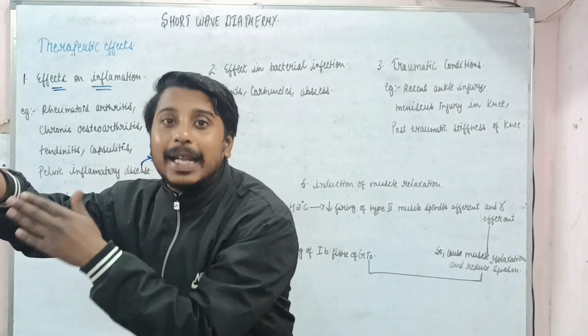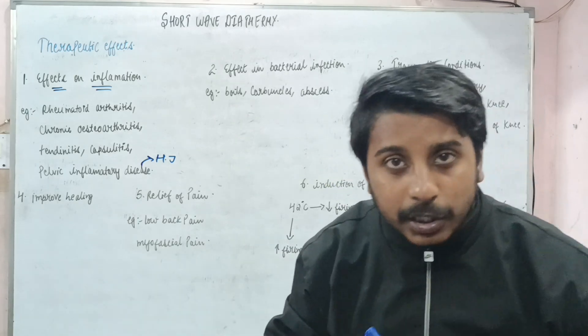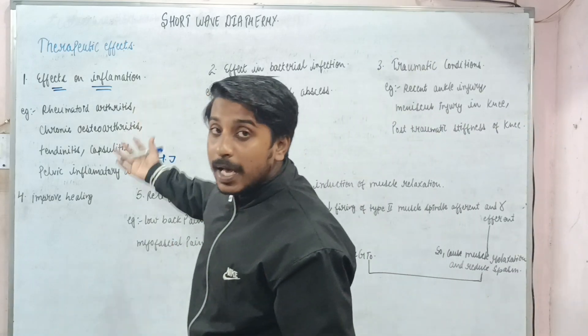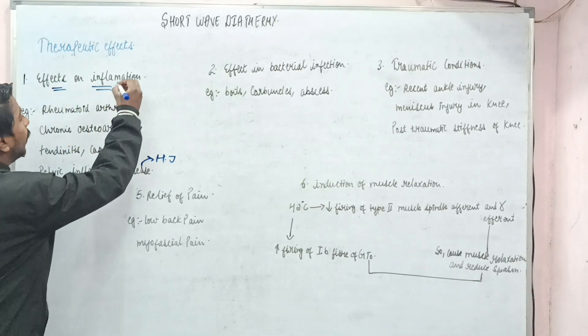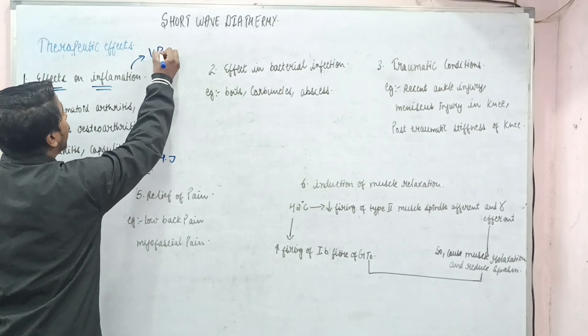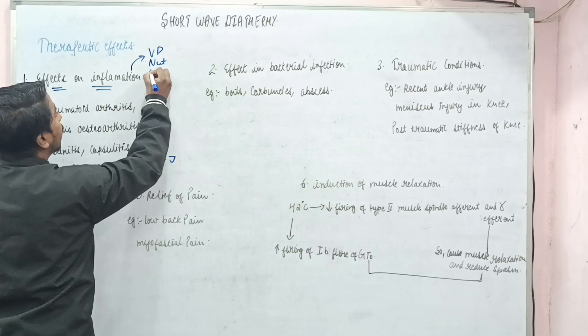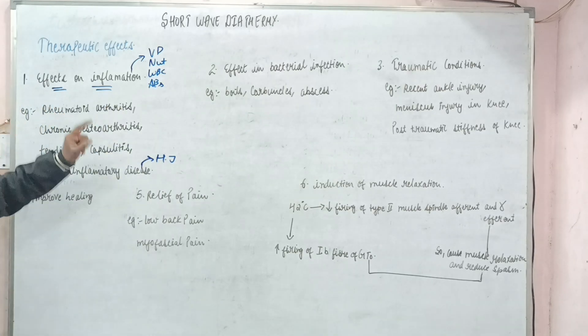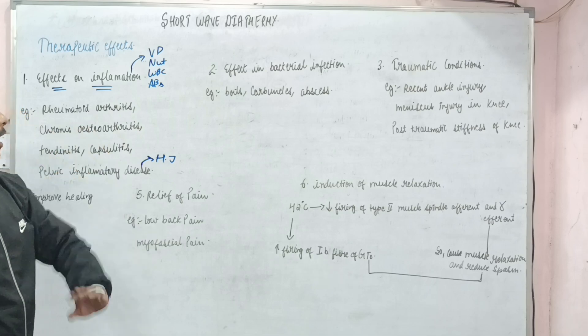Also there will be clearance of metabolic waste. If metabolic wastes are cleared, noxious irritants are cleared, definitely there will be some reduction in the inflammation. So what factors are important? First is vasodilatation, then nutrition is coming, WBC is coming, antibodies are coming, which are reducing the inflammation. And this whole thing is going to repeat N number of times in all these therapeutic effects.